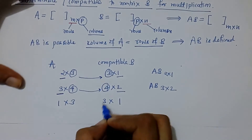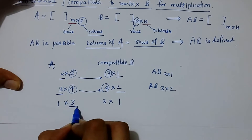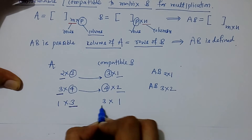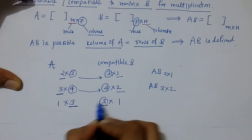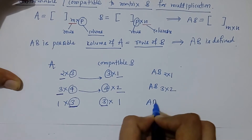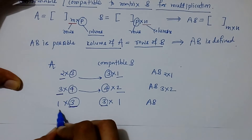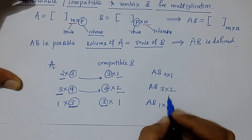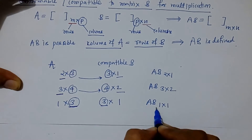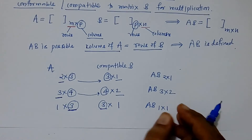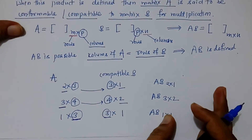Similarly, if we take another matrix of order 3 by 4 and another of order 4 by 2, columns of A equals rows of B, so the product AB is possible and the remaining order is 3 by 2. We can verify this by taking such examples.